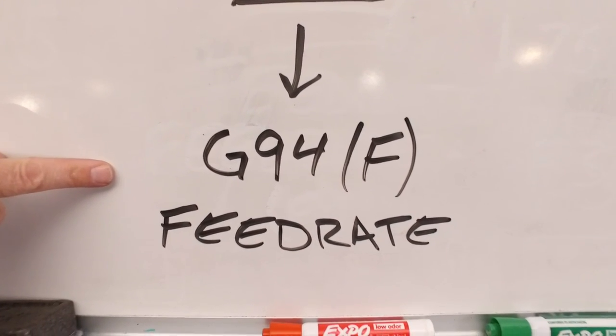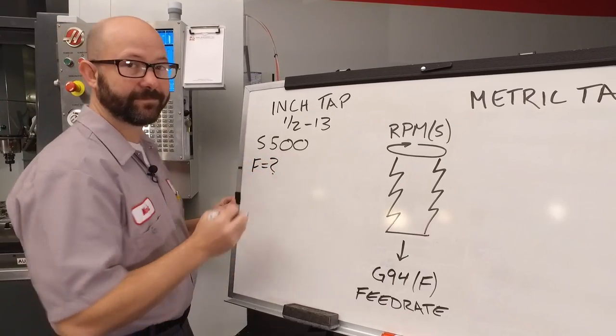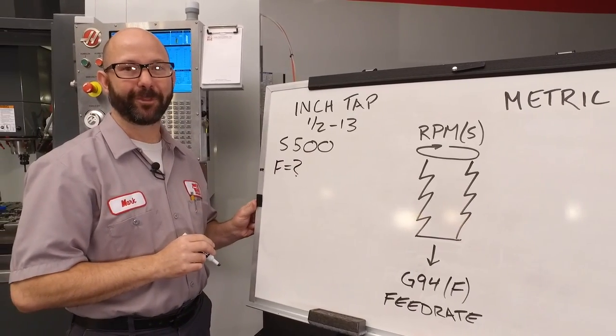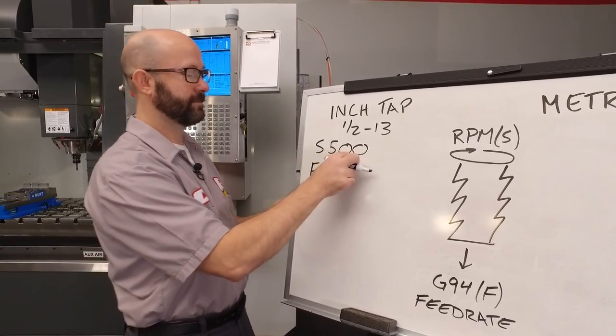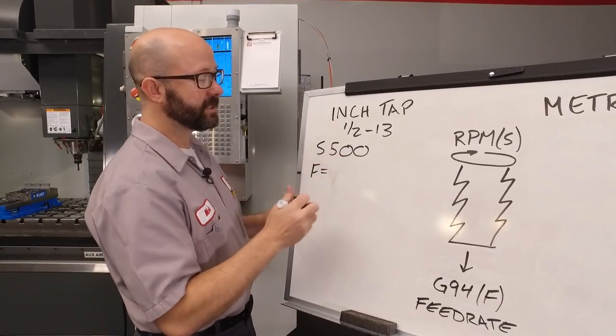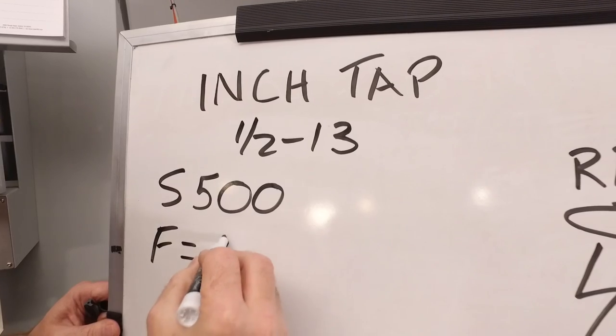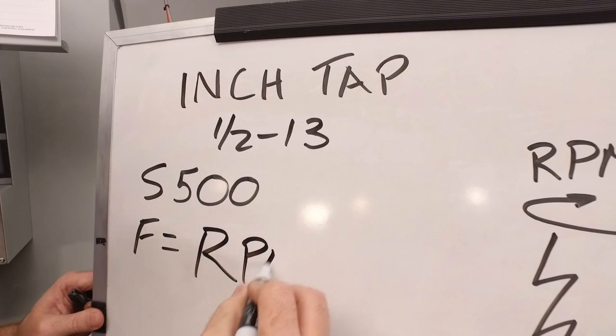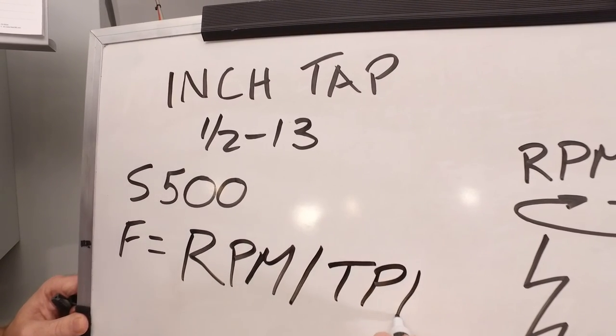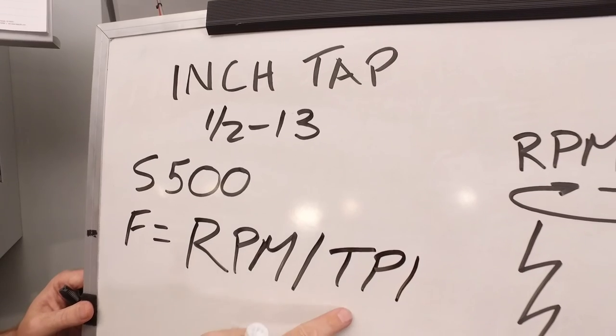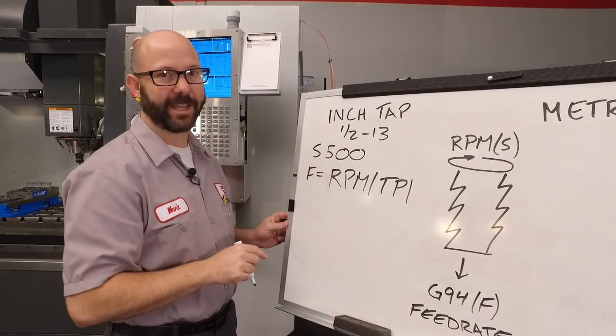The second piece to our puzzle is our feed rate, our F value. This is where we have to put on our thinking caps, but it's not hard because we've got a formula. For us, using an inch tap in inch mode, our feed rate is going to be our RPM divided by our TPI. Now what's TPI? That's our threads per inch. Where do we get that? It's right in the name of our tap.